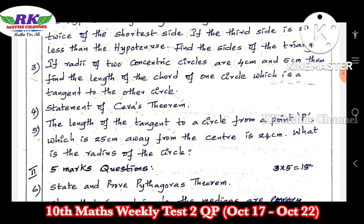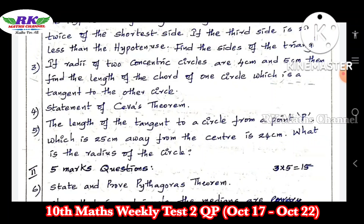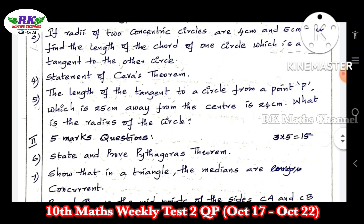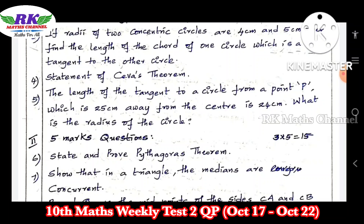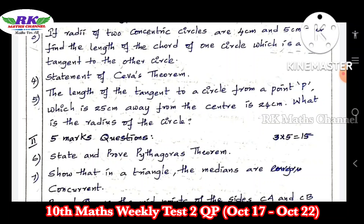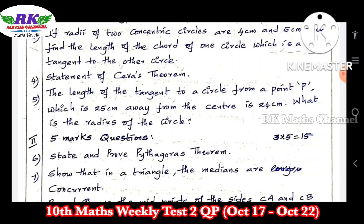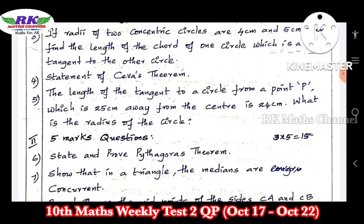The length of the tangent to a circle from a point P which is 25cm away from the center is 24cm. The center and the distance is the radius. The tangent length and the distance — the radius is the same.